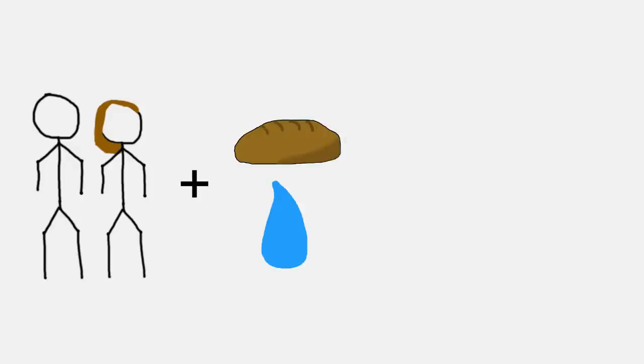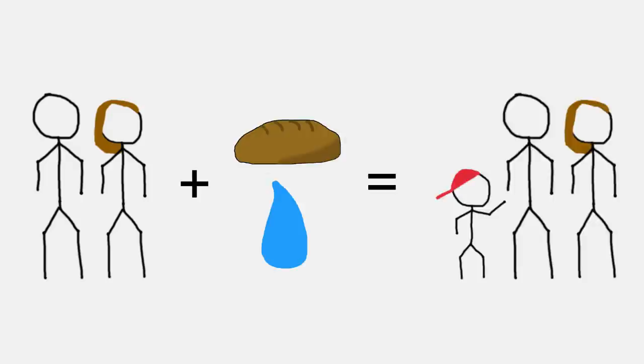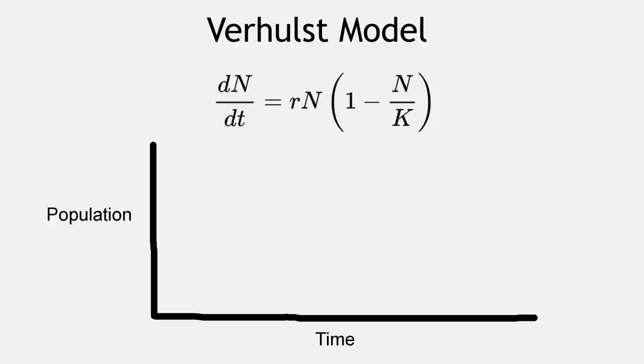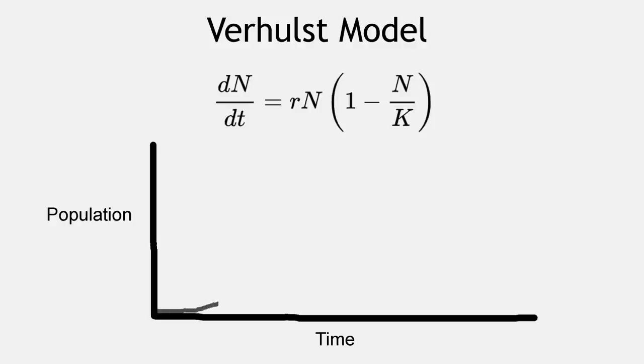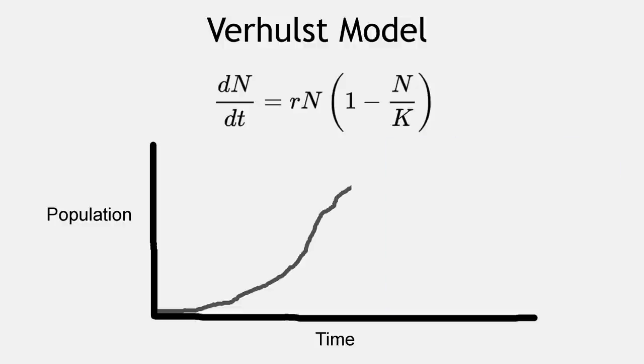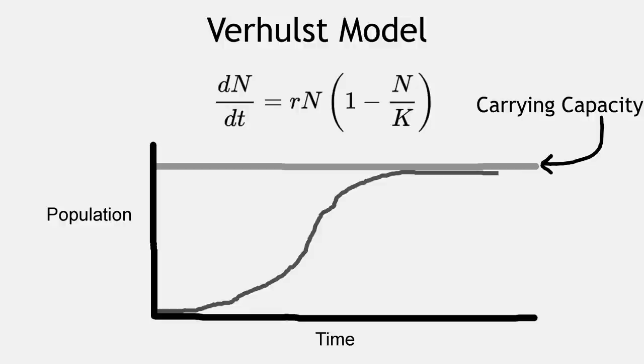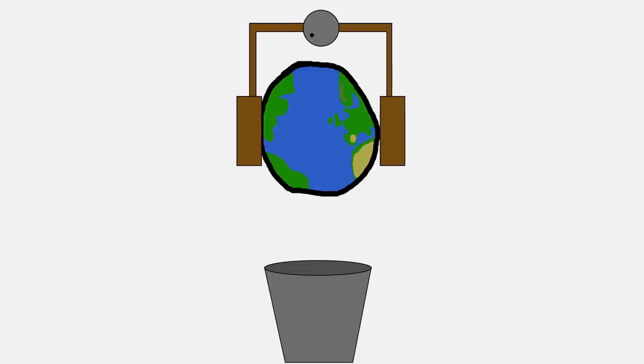To put it simply, living things need food to grow and reproduce. How large a population gets depends on how much food is available, based on the Verhulst model. As long as food is plentiful, you grow exponentially, like a bacterium. As you get closer to the number of people that can be supported by the area — called the carrying capacity — the population starts to even out. If you have more people than are supported by that carrying capacity, people are going to starve, bringing that population back down. Eventually, you reach a somewhat stable population that fluctuates only slightly. So surely, all we need to do is estimate Earth's carrying capacity, right?